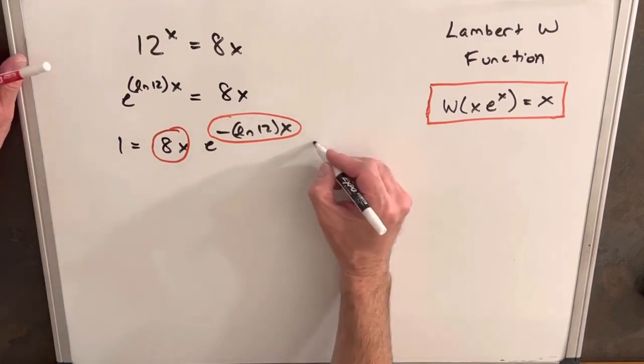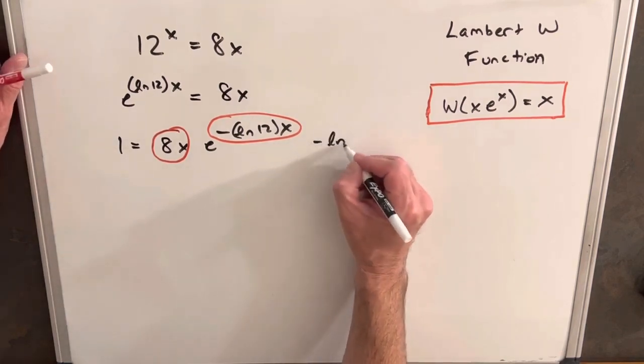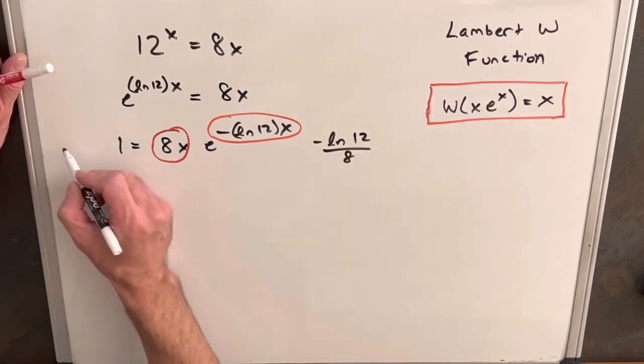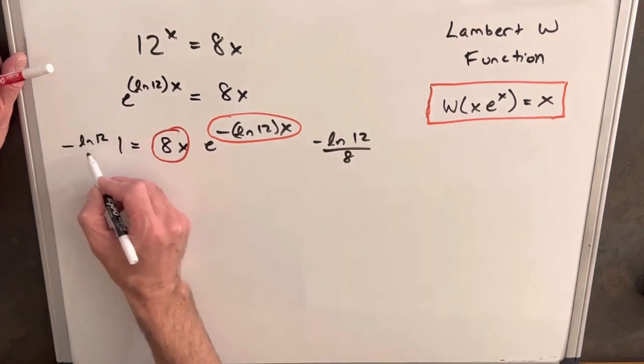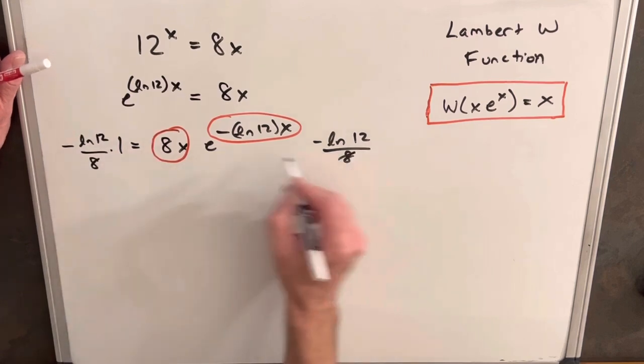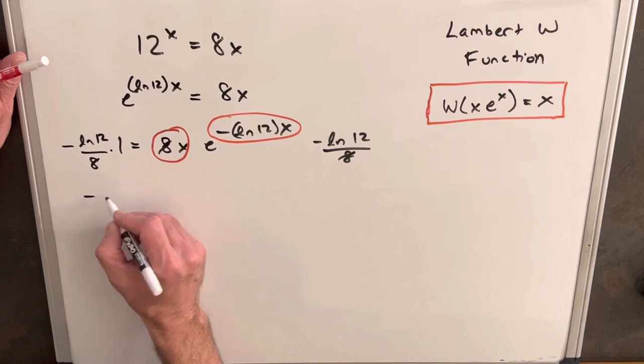It's actually not too bad though, as you'll see. If we multiply our right side by ln 12 over 8, we're going to get some cancellation, and we'll just do the same on the left side, ln 12 over 8. And we're going to have our 8s are going to cancel here, and then let's just rewrite this so it's clear.